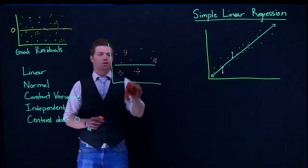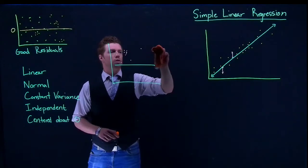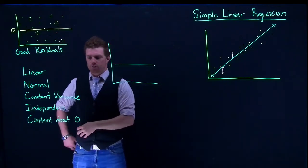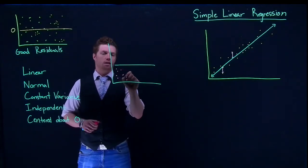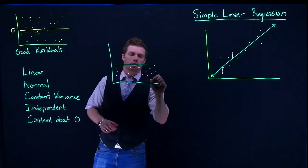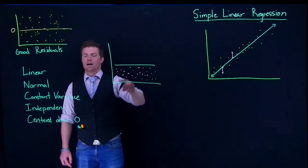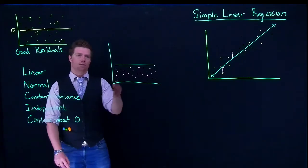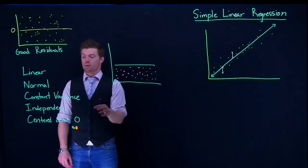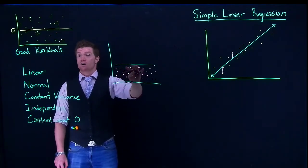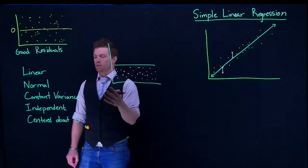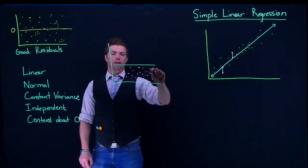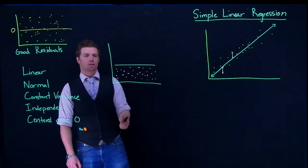Finally, our residuals need to be centered about zero. The zero line should have the residuals balanced around it. When using software, this one is almost never violated — it's mostly a problem if you're doing the math by hand or have shifted your model. Software centers everything automatically right in the middle of the residuals, but it is important that the residuals are actually centered about zero.